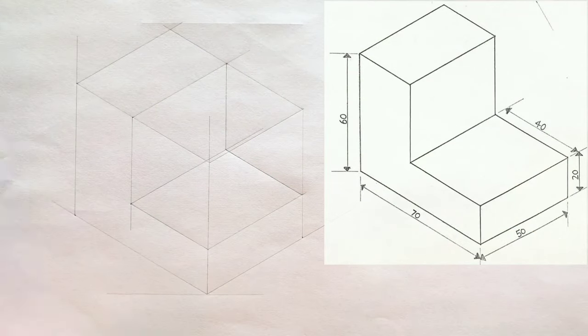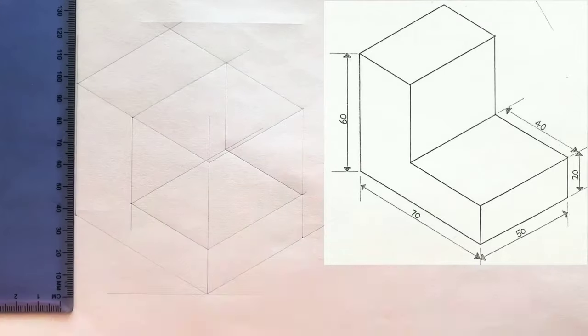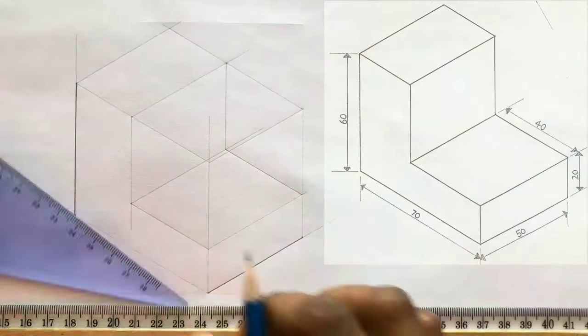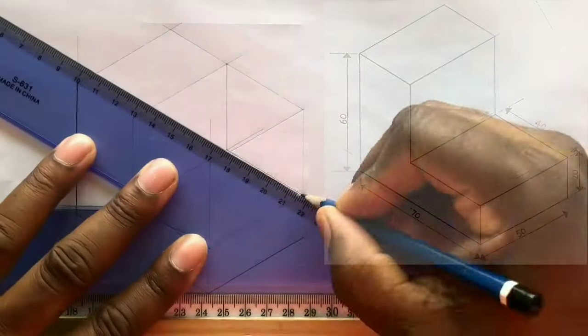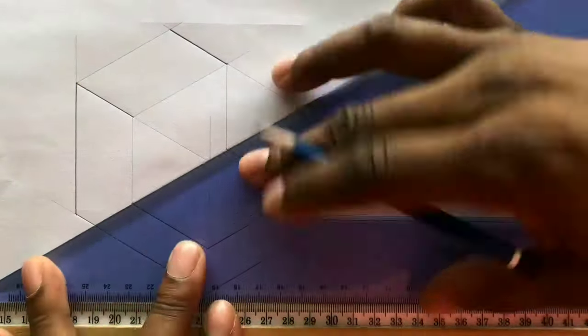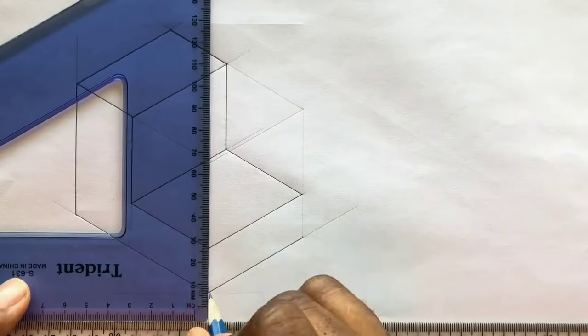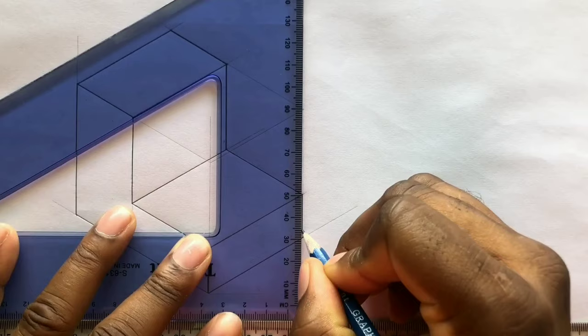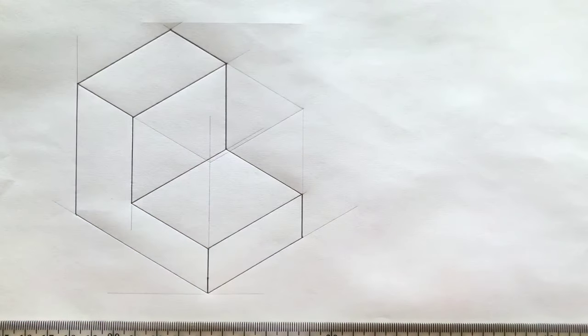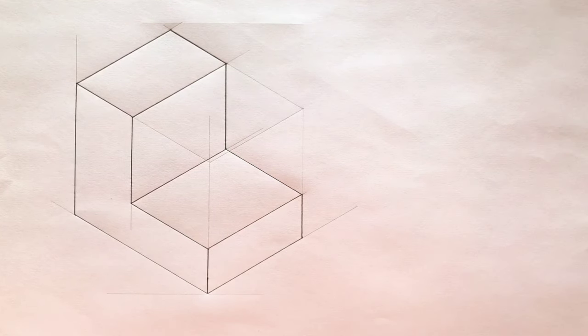Excellent! Go ahead and outline your required isometric projection. It was surely not difficult at all. Go ahead, border your paper and complete your title block.